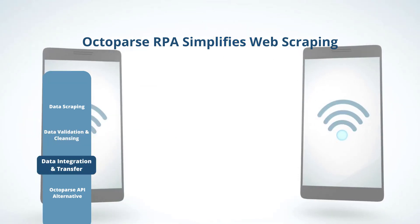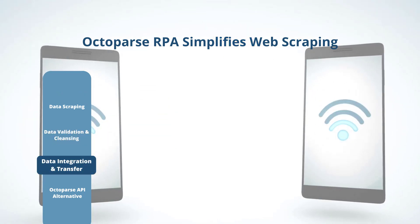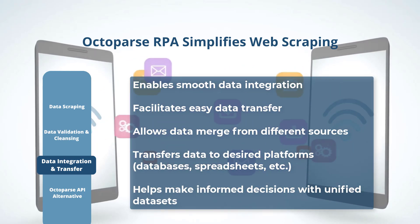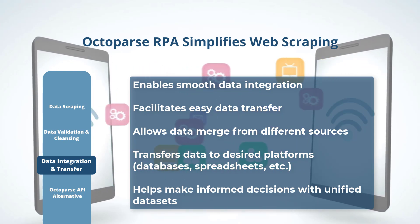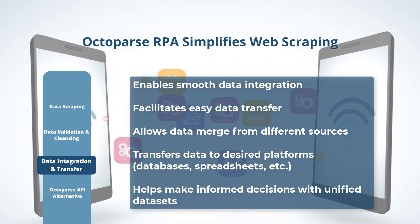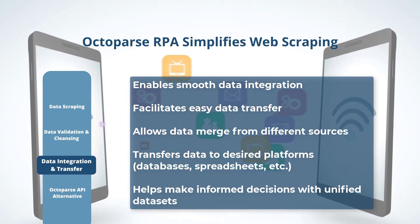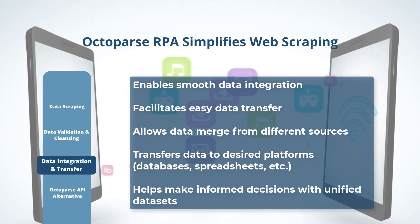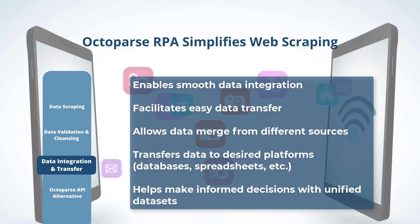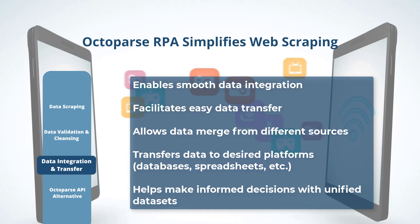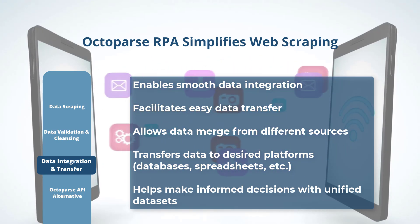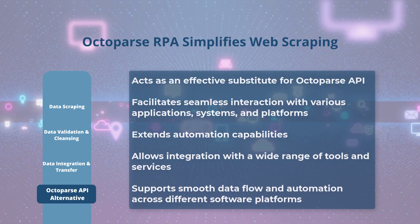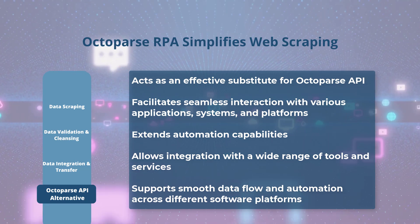Data integration and transfer: Octoparse RPA offers seamless data integration and transfer capabilities. You can effortlessly merge data from different sources and transfer it to your preferred destinations — such as databases, spreadsheets, or other applications. This simplifies the process of consolidating and managing data from various channels, enabling you to make informed decisions based on comprehensive and unified data sets.